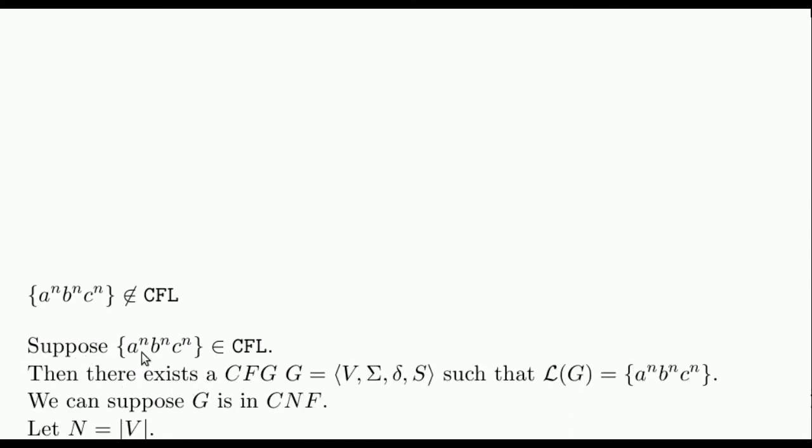Now we justify that the language A^n B^n C^n is not a context-free language. We proceed by contradiction supposing that it is. Then there exists a context-free grammar G that generates it. Without loss of generality, we can assume that G is in the Chomsky normal form, because we have already seen that any grammar can be converted to a Chomsky normal form preserving the language. Let N be the number of variables in G.